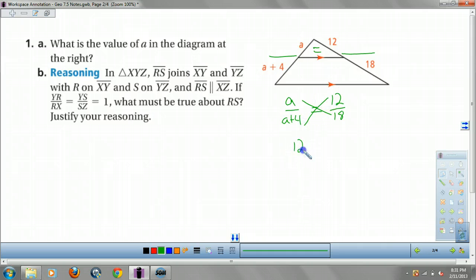Cross multiply. You get 12A plus 48. Make sure to distribute that 12 to each of those. Equals 18A. Subtract your 12A from both sides. 48 equals 6A. Divide both sides by 6. And you get 8 equals A.